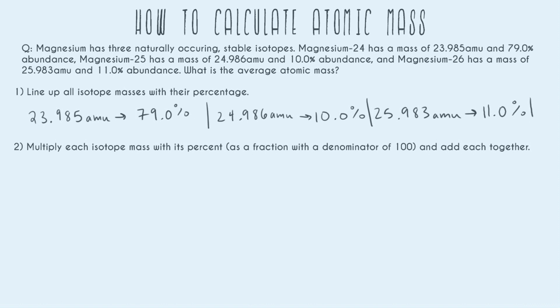And so number two is basically just to set up a big math problem and then slowly solve. So we're going to multiply each isotope mass with its percent, and I like to write it as a fraction with a denominator of 100, and then we add each together. So first I'm just going to write all this down. So we have each isotope mass times its percent, which I like to write just to avoid confusion as a fraction with a denominator of 100. That way when I'm plugging in, I know I'm not going to get anything wrong or confused with my decimals, and then we're going to add that to each other isotope.